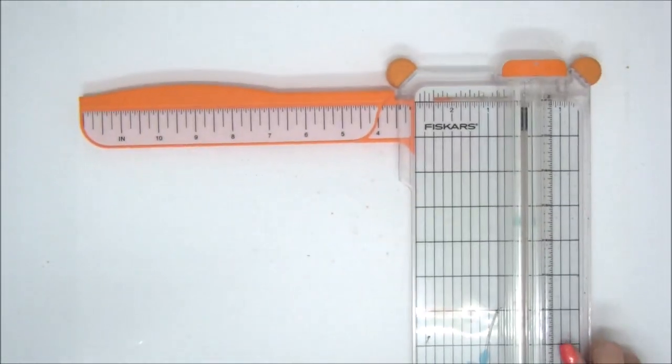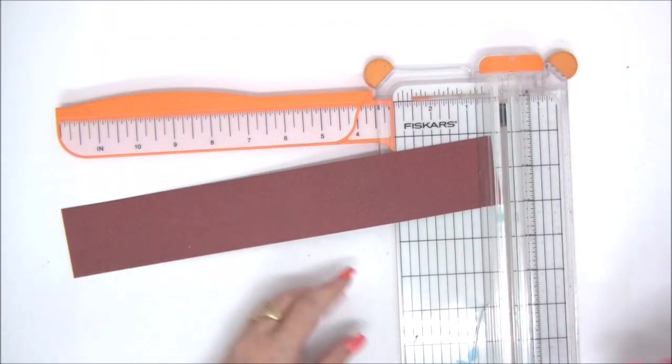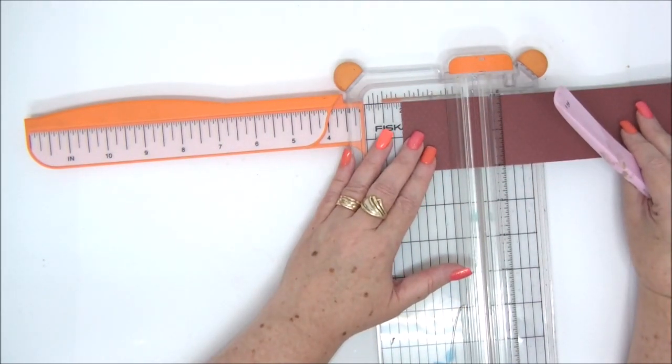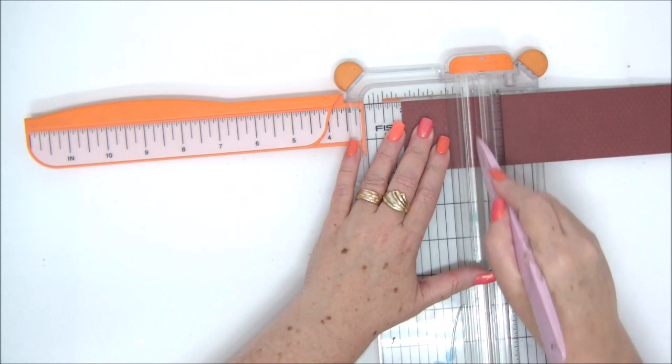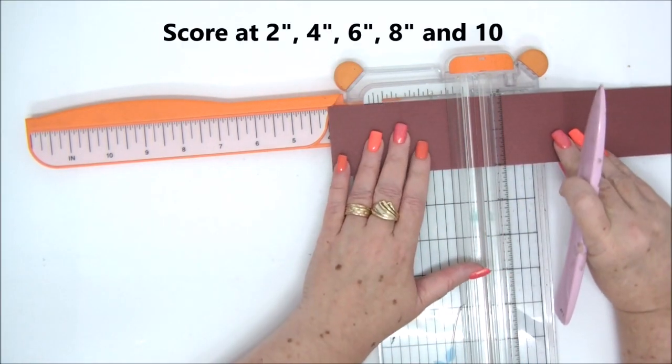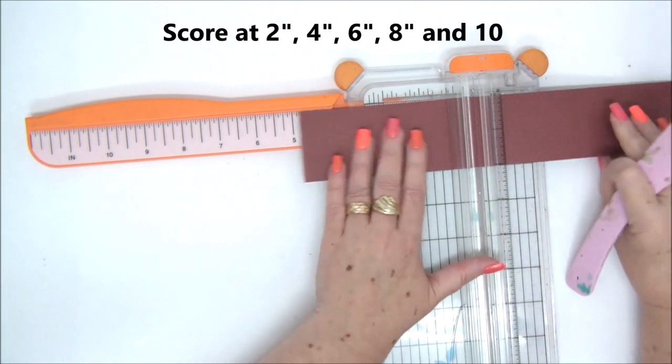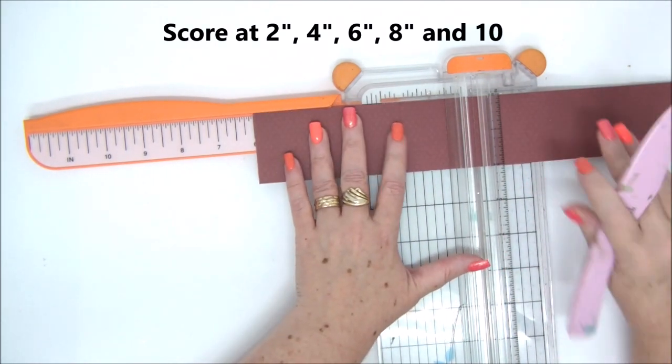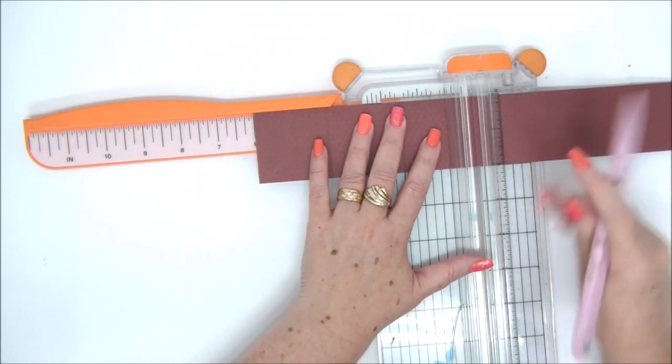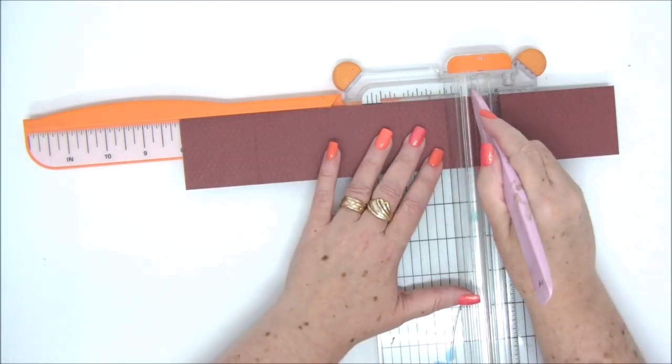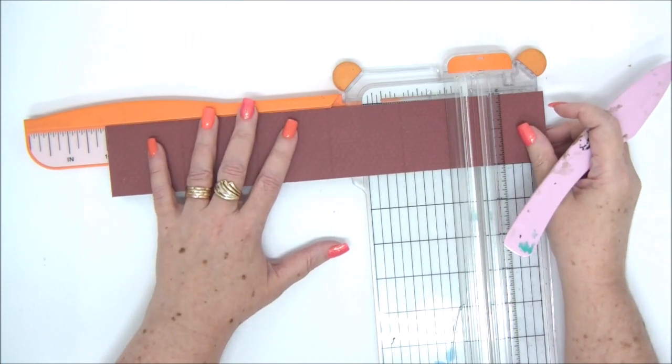So we're going to start with our concertina pieces and we're going to score them at 2, 4, 6, 8, and 10 inches. You have four concertina pieces and you're going to score all of them the same way at 2, 4, 6, 8, and 10 inches, basically creating squares.